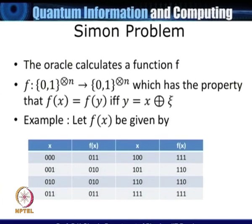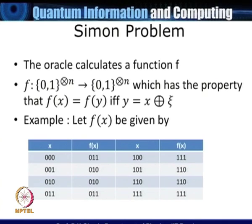Simon's problem is a straightforward extension of the Bernstein-Vazirani problem. In this case the oracle calculates a function f mapping n-qubit input to an n-qubit output, with the property that for a pair of inputs x and y, f(x) equals f(y) only if y equals x XOR ξ (addition modulo 2), where ξ is an unknown string we need to find.